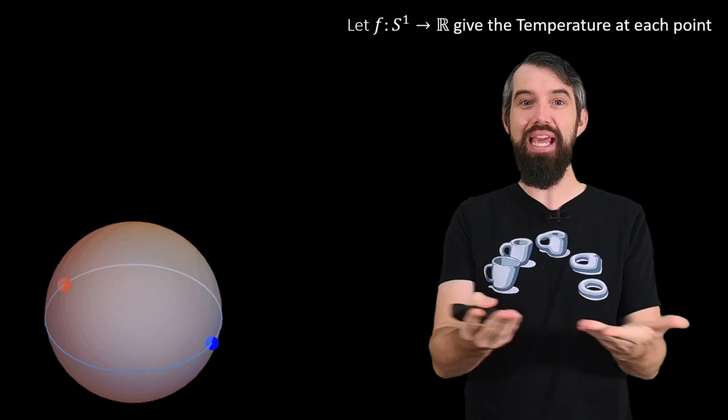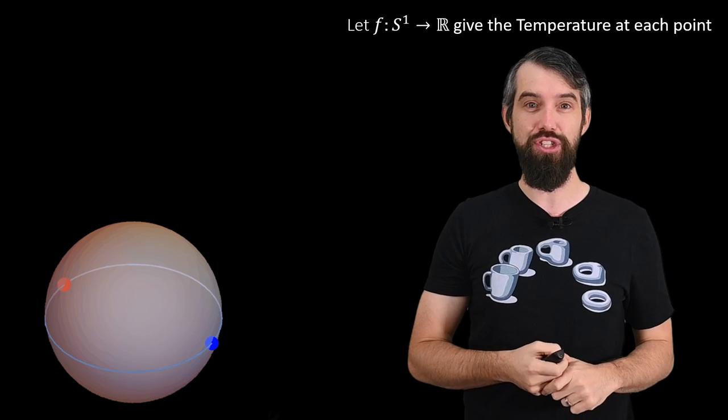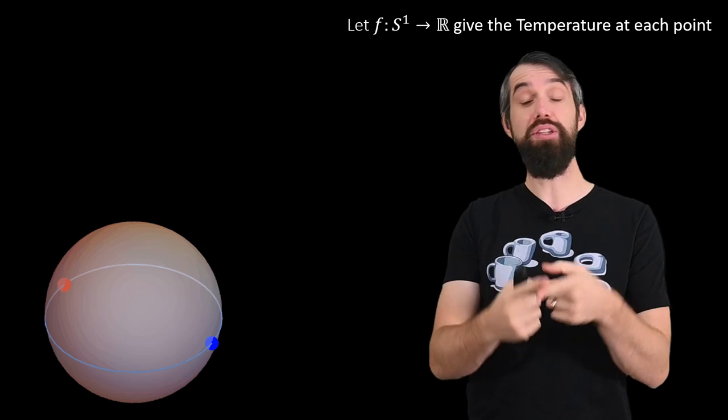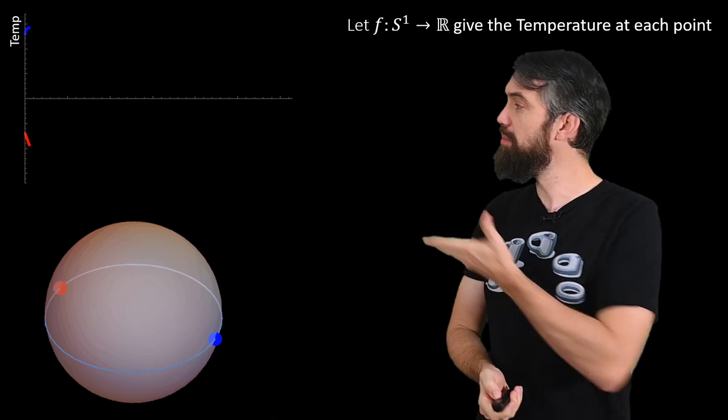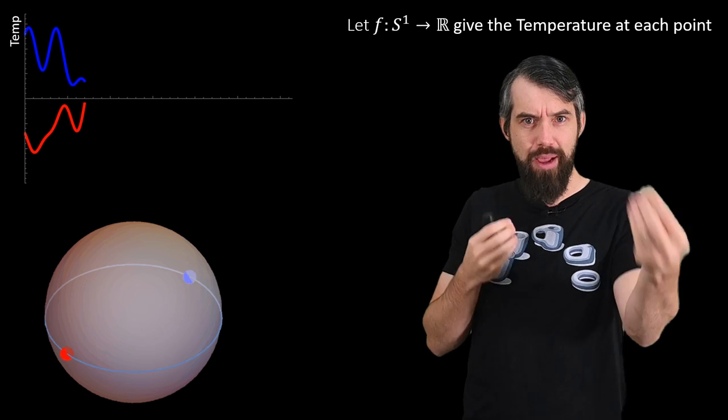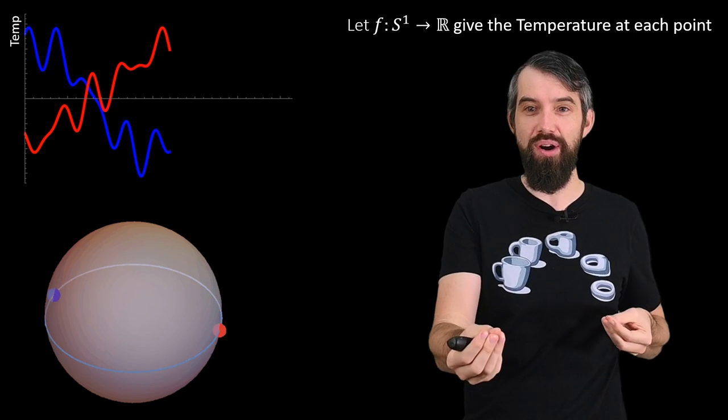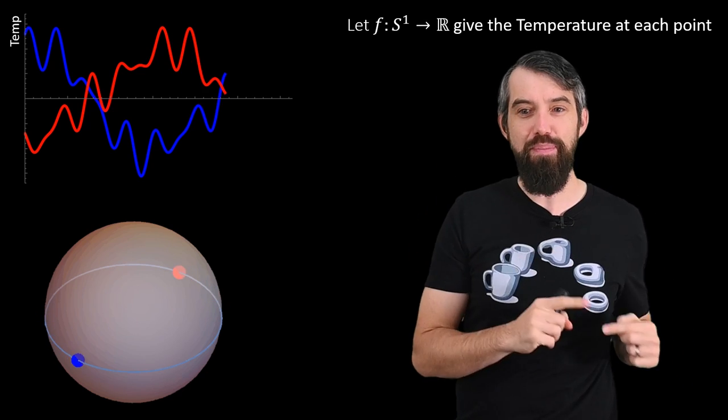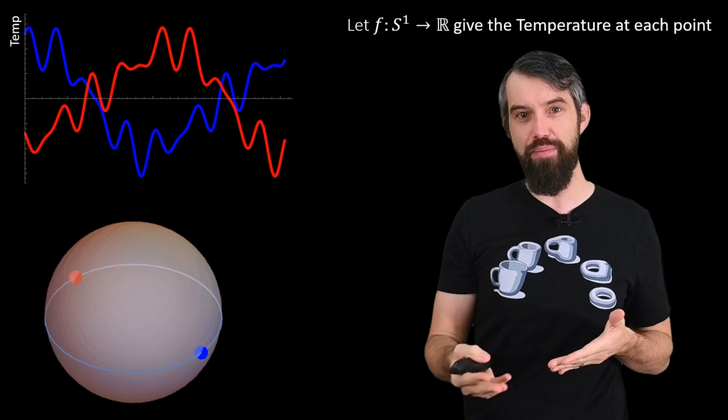Then I want to consider a function that takes any place around this equator and figures out what is its temperature at that location. We call just a circle in mathematics often S^1, so this is a function from S^1 to the real numbers. And it looks a little bit like this. As my point and its antipode move around the equator, I can plot what the temperature is at the blue point and at the red point.